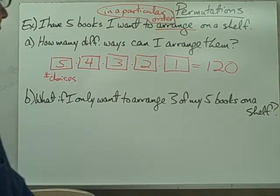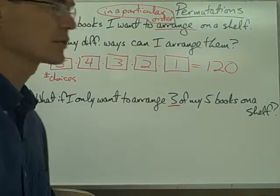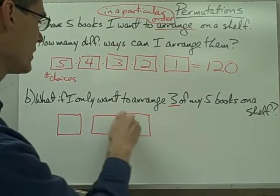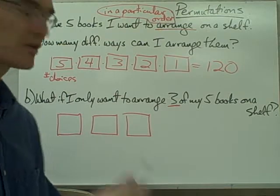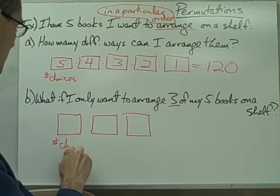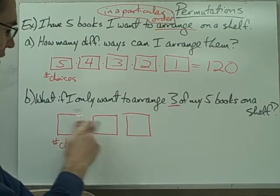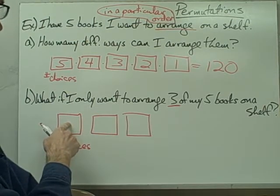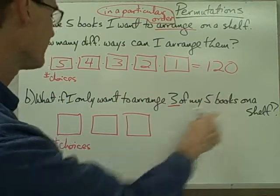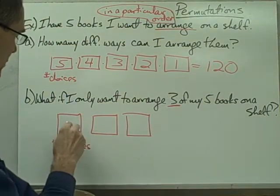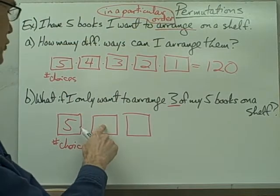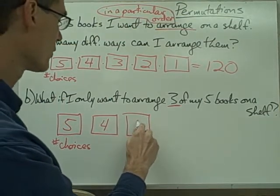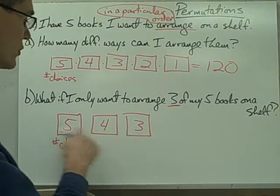Now take a look at part B. It says: what if I only want to arrange three of my five books on a shelf? In that case, I'm only going to have three boxes to represent the three positions I'm going to use to arrange my books. Each box again represents the number of choices for each particular position on the shelf. The number of choices for this first slot — I'm arranging three of my five books — so I still have five books to choose from, giving me five choices. The second position will have four choices since I've already used one book, and the third position will have three choices since I've already used two.